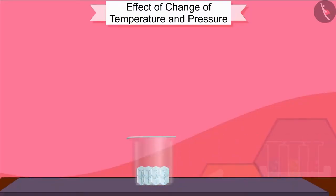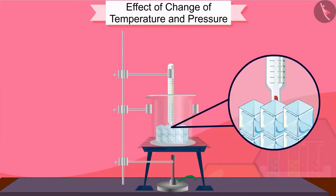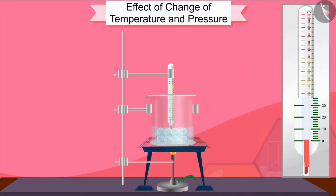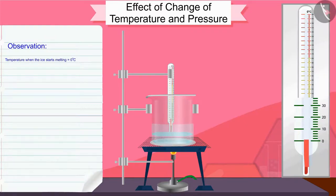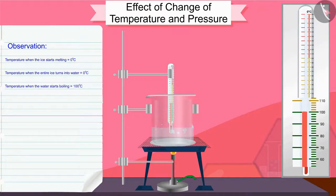Take 150 grams of ice cubes in a beaker and hang a thermometer so that the bulb is touching the ice. Start heating the beaker on a low flame and note down the temperature when the ice starts melting. When the entire ice turns into water, note down the temperature again. Then heat the water by stirring until it starts boiling. Keep an eye on the thermometer until most of the water vapour is formed, and note down the observations.